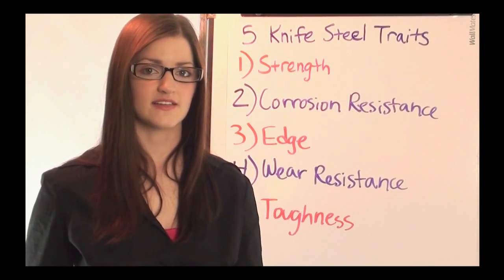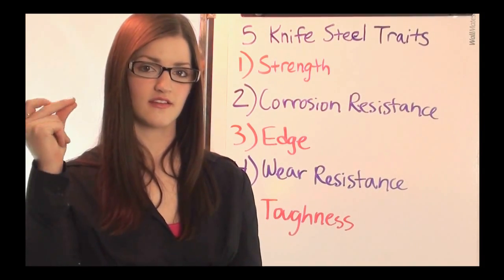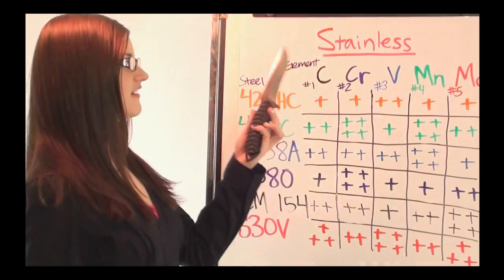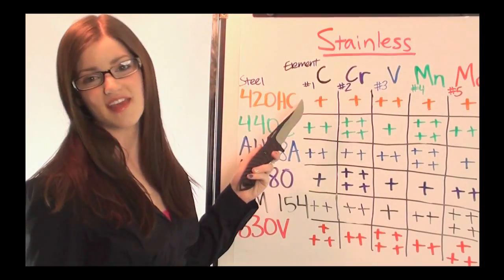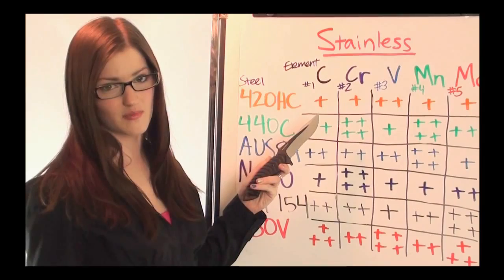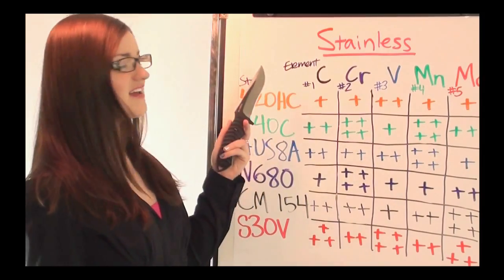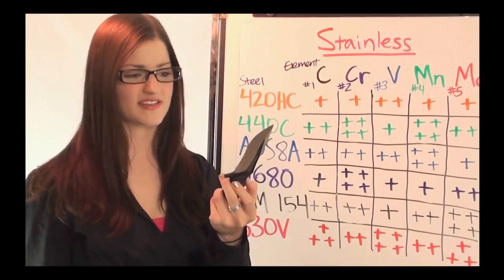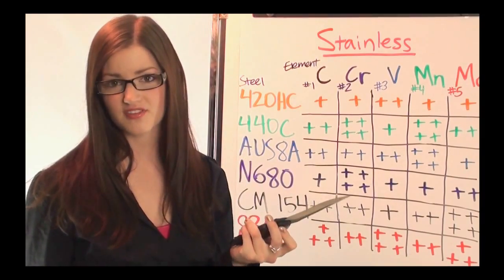Here's a chart comparing some of the steels and their compositions. Here's my stainless steel chart. Right here I have some of the elements from the periodic table of elements, but I only picked five of them because these five actually pertain to what makes different blade steels behave differently.